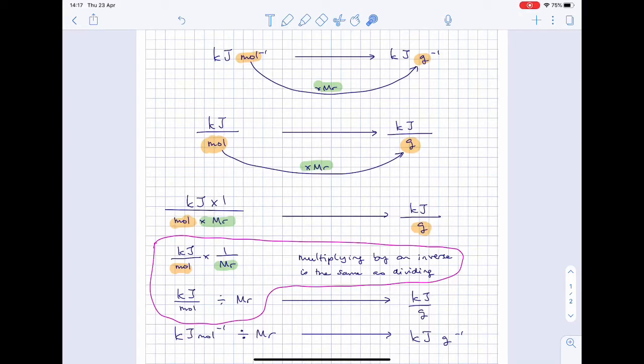Okay, so to convert kilojoules per mole to kilojoules per gram, we're effectively converting the moles to grams. And we know to convert from moles to grams, we multiply by MR.